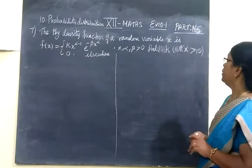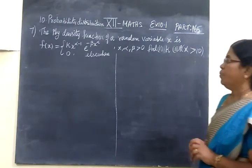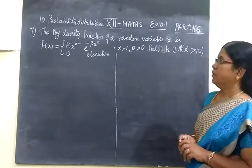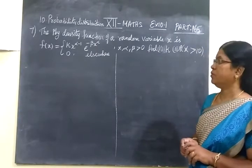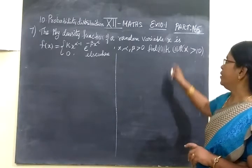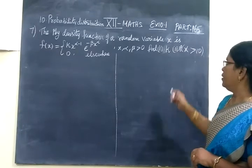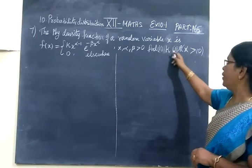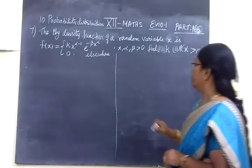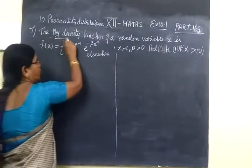Today we want to see part 165 in probability distribution, seventh question. In the last class we saw the sixth question. The probability density function of a random variable X is given. We have to find the value of K and the second part P of X greater than 0, since it is given as a probability density function.